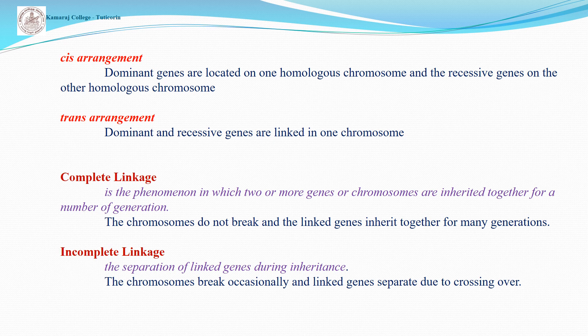In linkage, there are two types: complete linkage and incomplete linkage. Complete linkage means the phenomenon in which two or more genes on chromosomes are linked and inherited together for a number of generations — the chromosomes do not break. Incomplete linkage means the separation of linked genes during inheritance; the chromosomes break occasionally and linked genes separate due to crossing over.